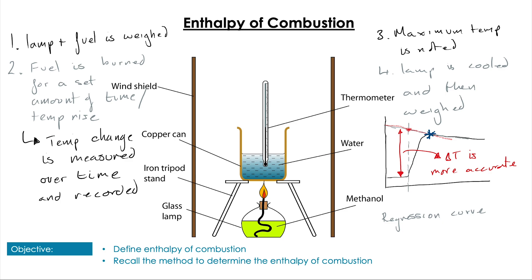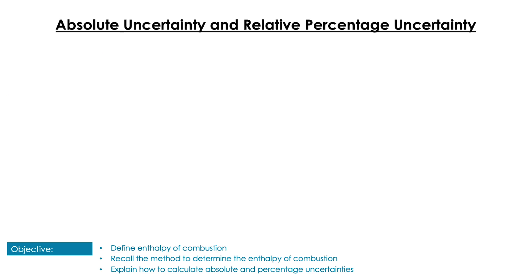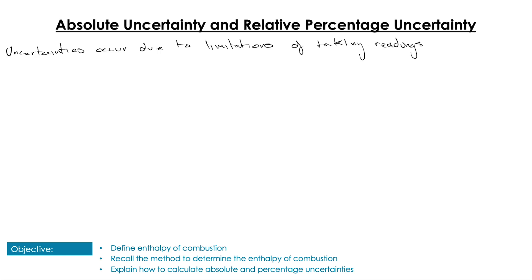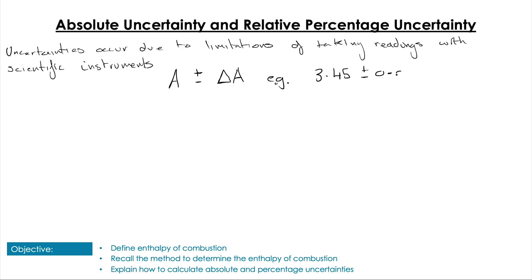You may also be asked to use the regression plot technique in exam questions, so do watch out for that. Now before we jump straight in, I wanted to introduce or update us on absolute uncertainty and relative percentage uncertainties — things we'll revisit a lot in this course. Uncertainties occur due to limitations in taking measurements. With anything we take measurements with, there is an associated uncertainty. For example, measurement A is going to have plus or minus delta A, so something like 3.45 ± 0.01 grams, where delta A — 0.01 — is our absolute uncertainty.